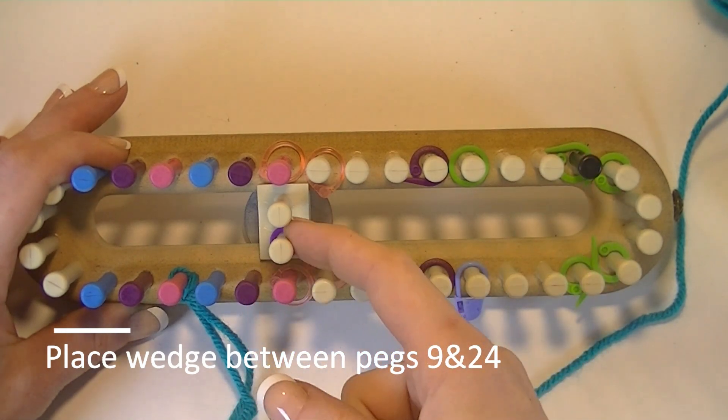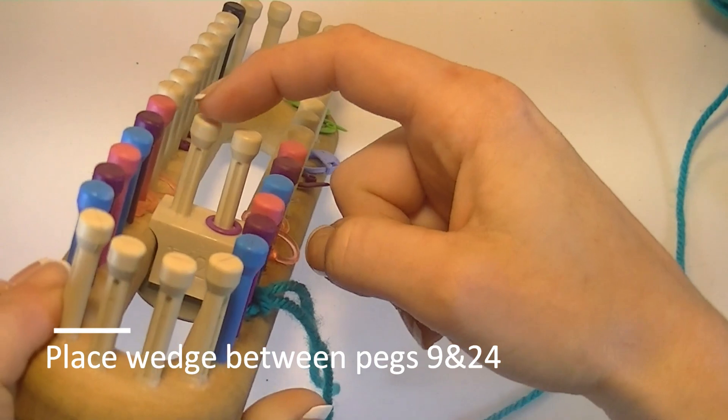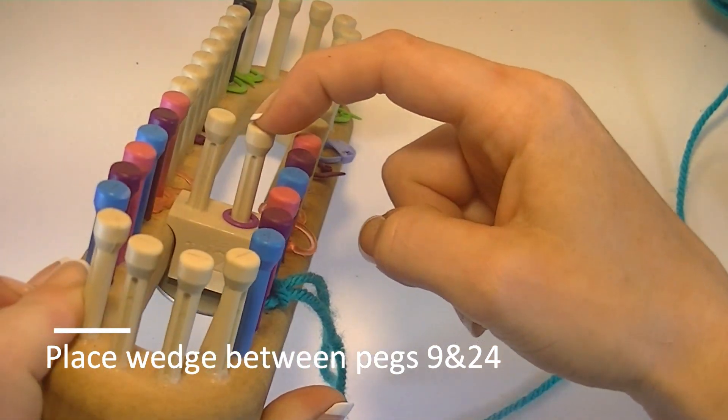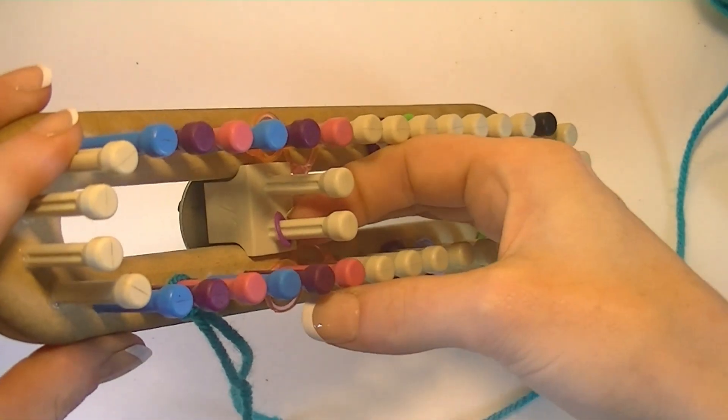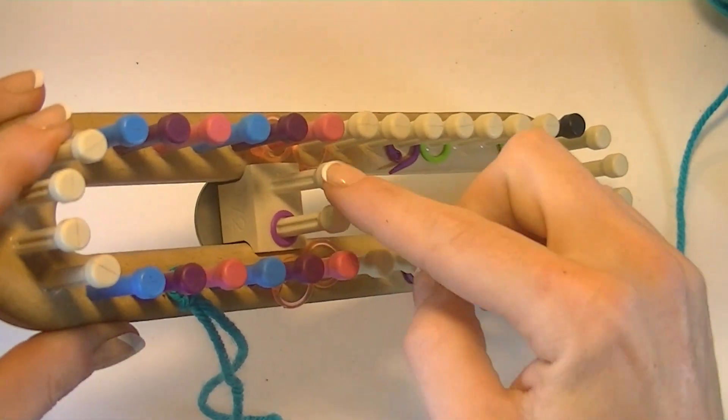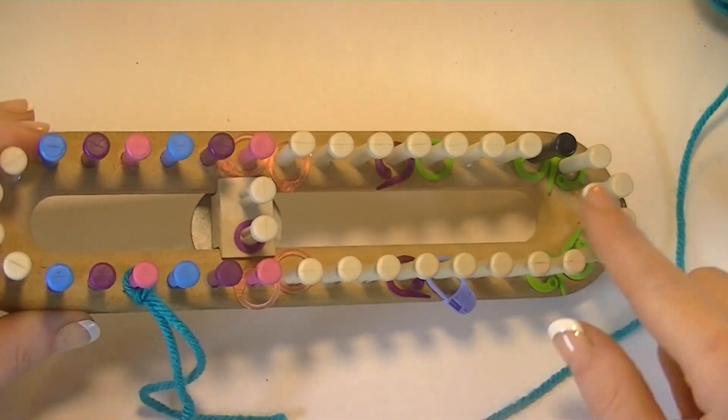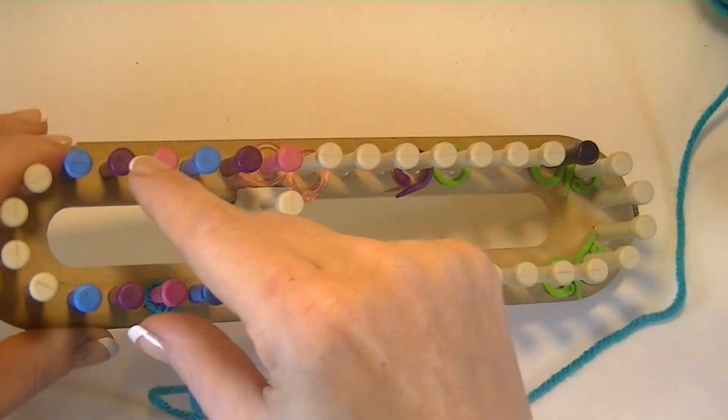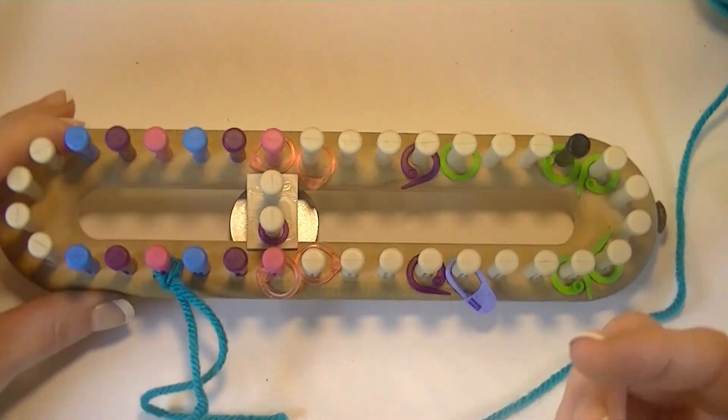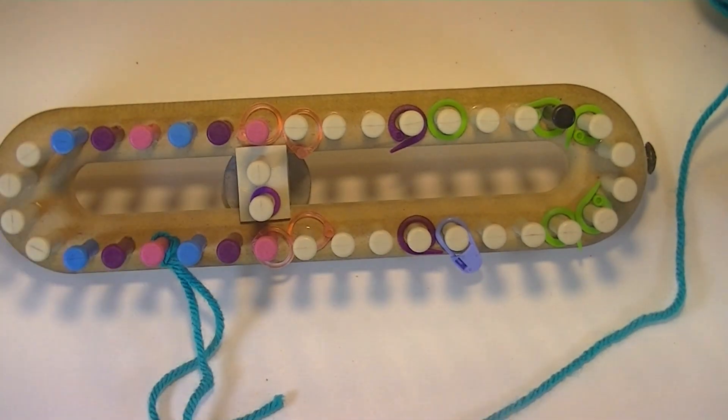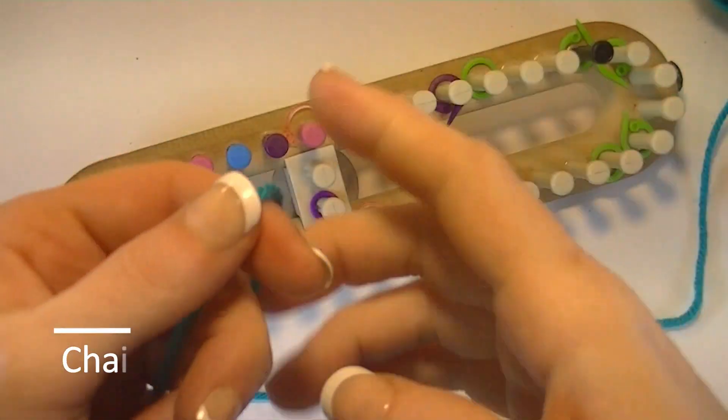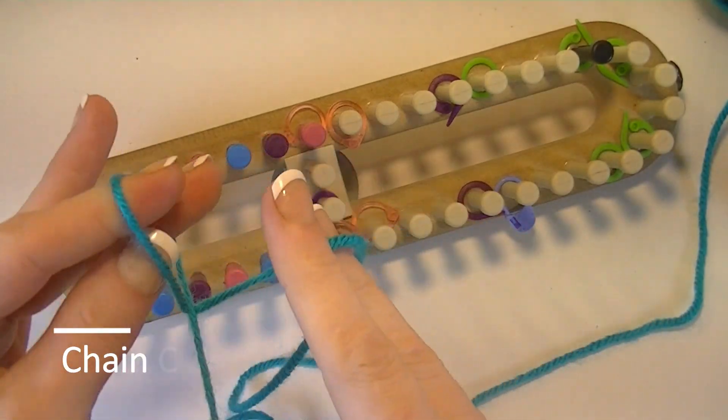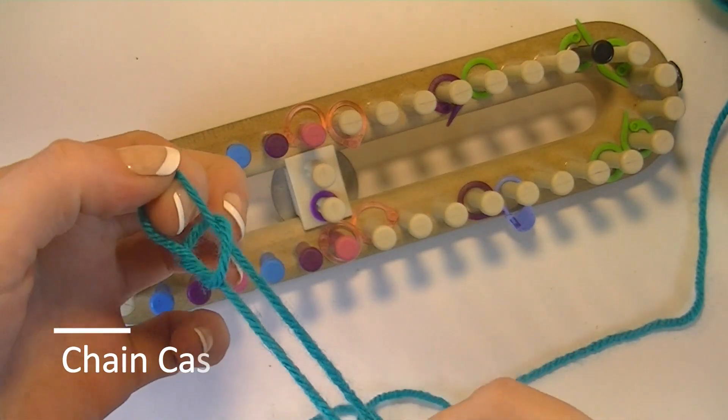We will use the wedge here. That wedge, zero one, zero two is how I keep track of those. I find it easier to start on the wedge because as the wedge moves, your starting peg stays the same place.